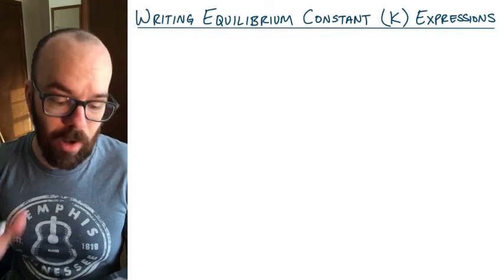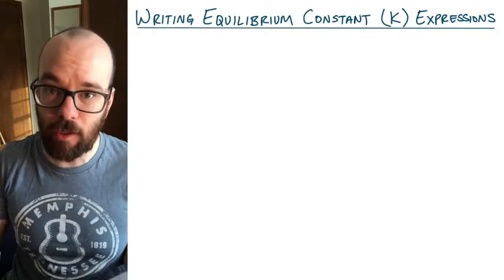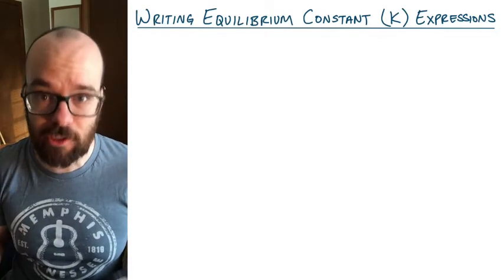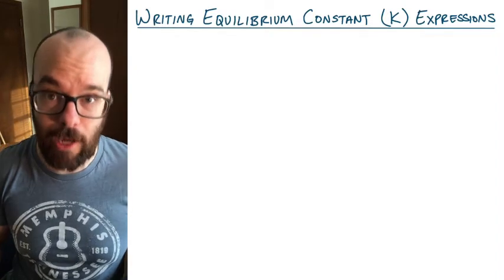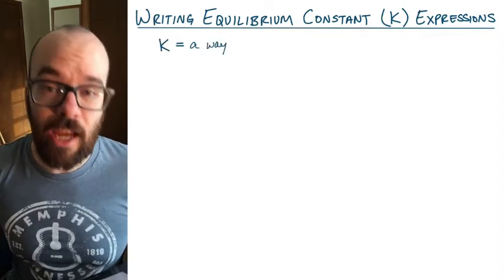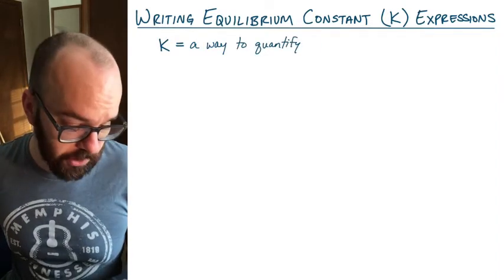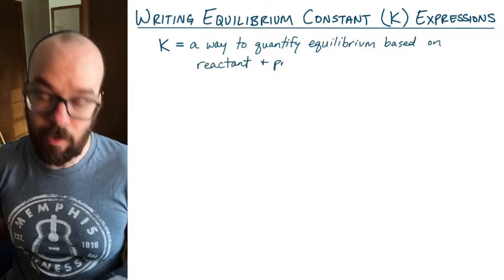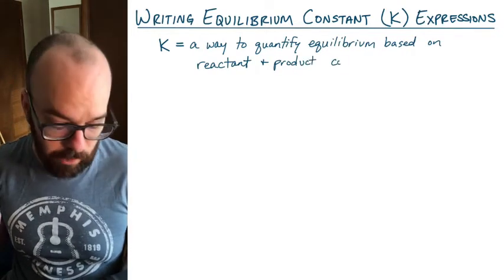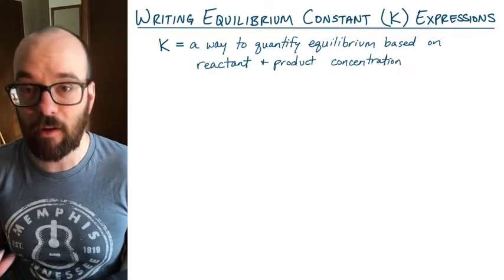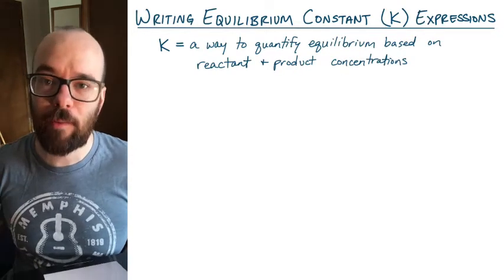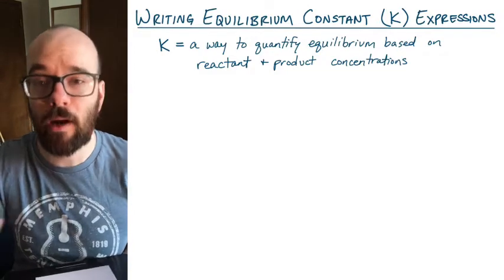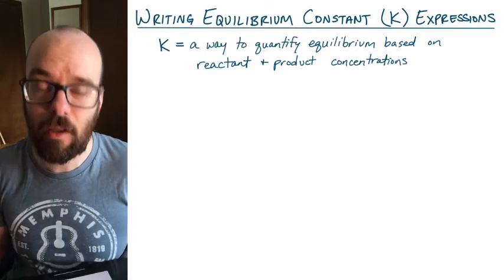In this video we're looking at how to write equilibrium constant expressions, or K-value expressions, for equilibrium reactions. A K-value expression is a way to quantify equilibrium based on reactant and product concentrations. It generally describes how much product there is compared to how much reactant there is.